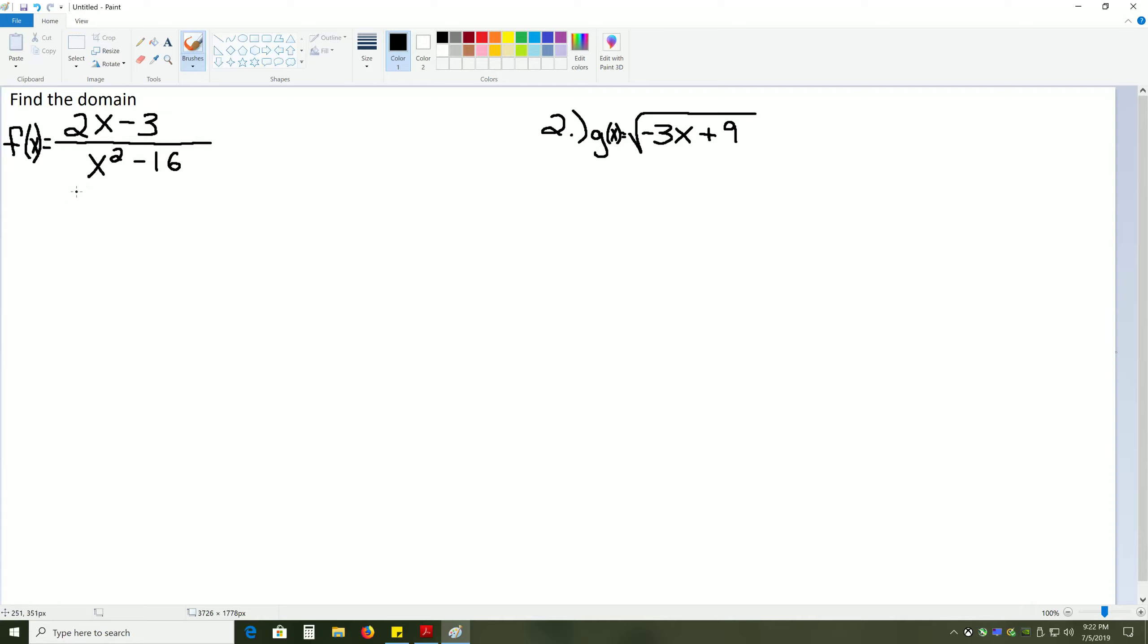When you're finding the domain, you're going to take this denominator and say that it cannot be equal to 0. Whatever values we find here cannot be plugged into the original problem. So, we're going to solve each one of these. To solve it, we could use the square root property or factoring. I'll just use factoring to make it pretty quick and simple.